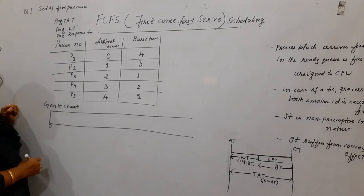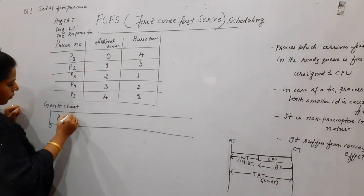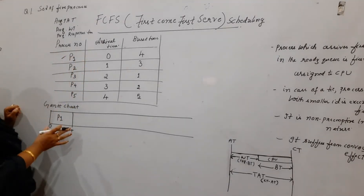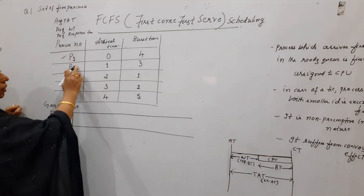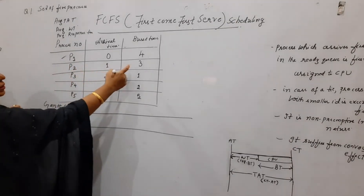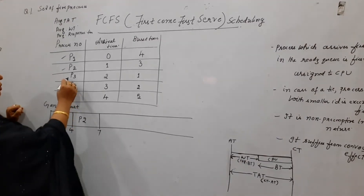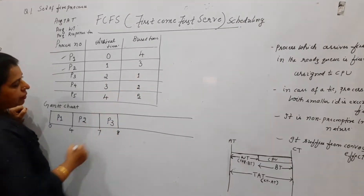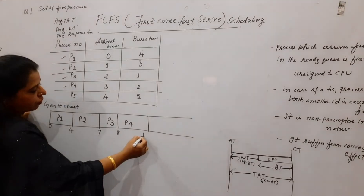Let us start the chart at time 0. At time 0, P1 has arrived and P1 has a burst time of 4 units, so it will complete its job at time 4. P2 arrived at time 1 but will get its chance only after P1 completes. P2 has a burst time of 3, so 4 plus 3 equals 7 — P2 completes at 7. P3 needs only 1 unit of time, completing at 8. P4 has a burst time of 2, so P4 completes at 10.